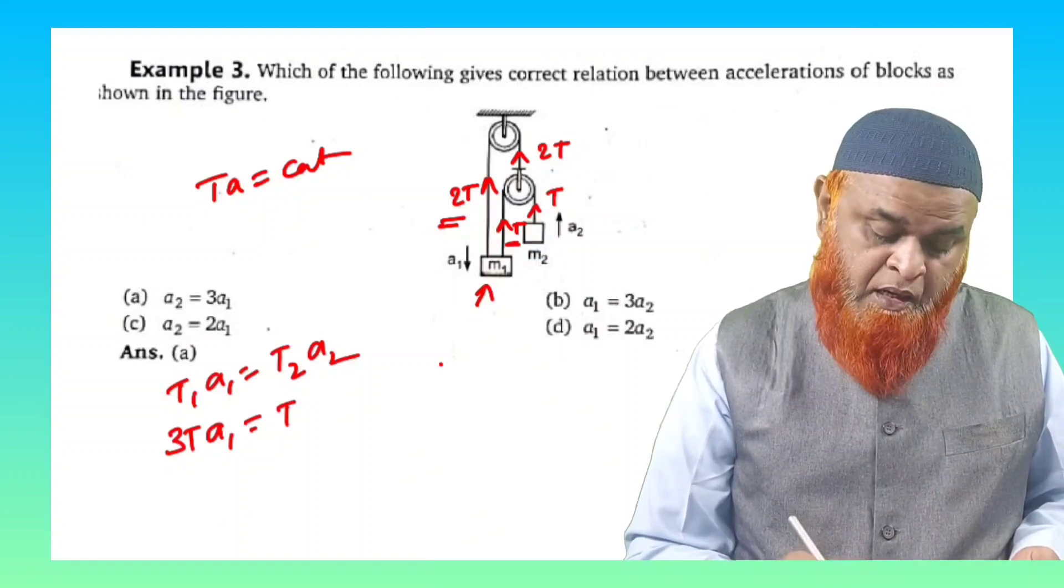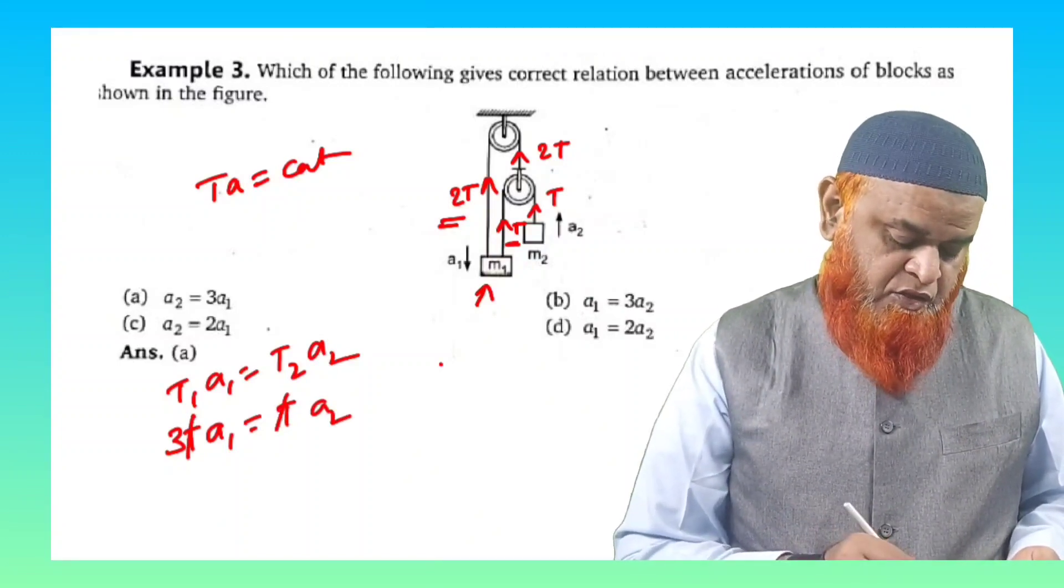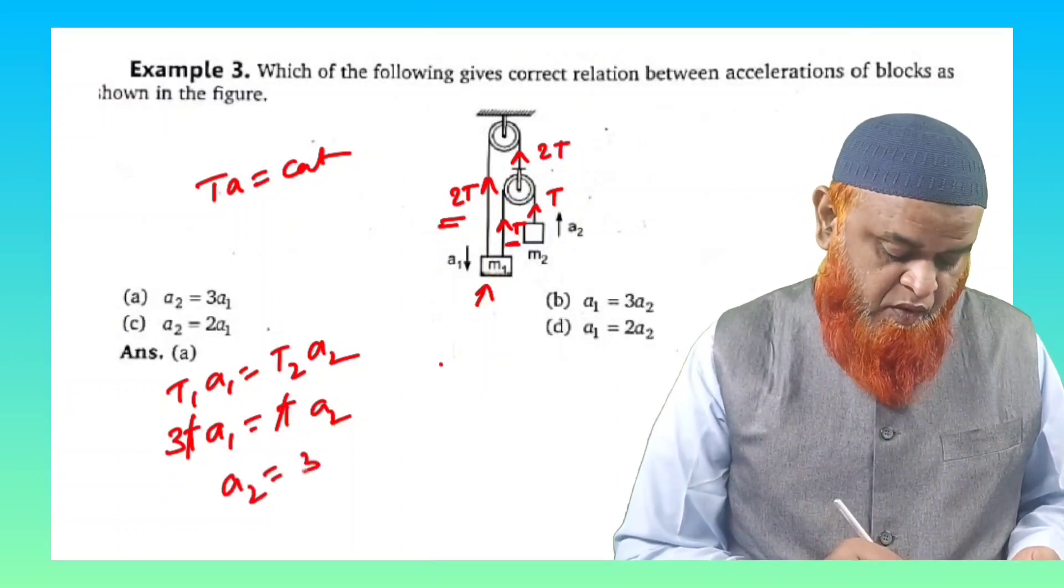here if you consider tension is T here and acceleration is going to be A₂. So with this it is clear that we can write A₂ is equal to 3 times of A₁.